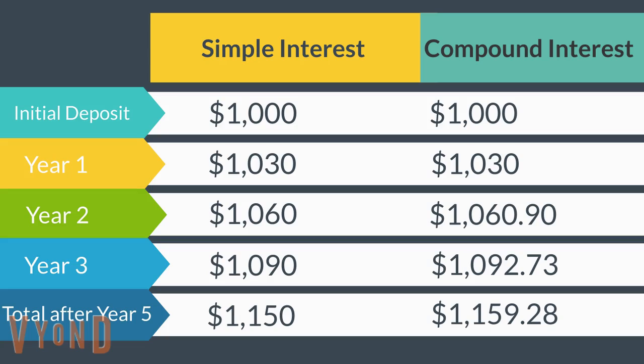Consider that that $1,000 is actually $100,000. Now the difference in simple versus compound interest is $9,280 over those five years, and the amount grows increasingly the longer you invest in it.